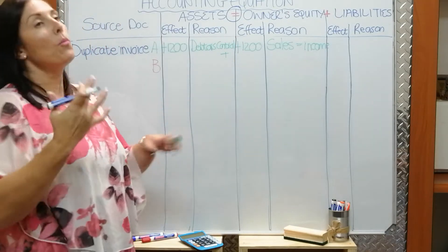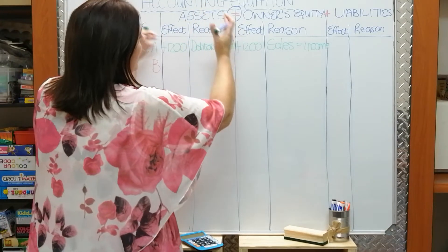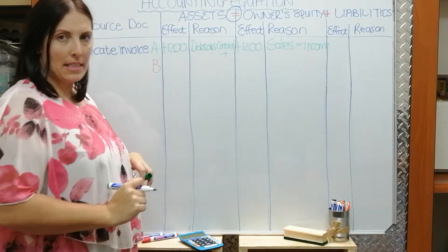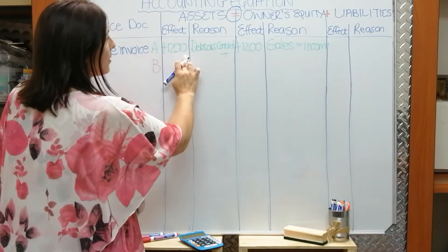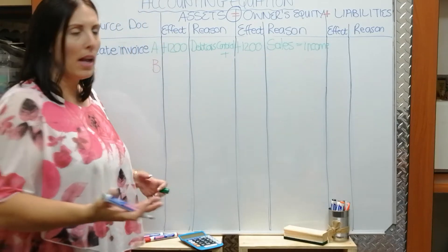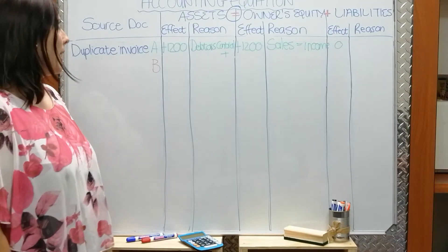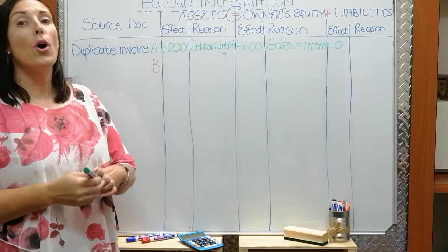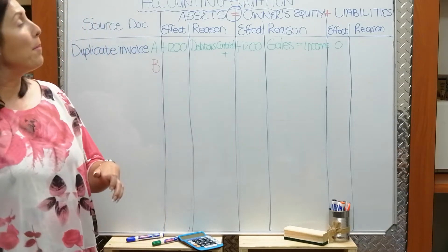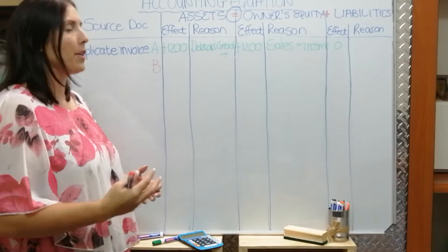We're not done with this transaction yet, but you can already see that my assets — the left part of the equation — is equal to my owner's equity plus liabilities: plus 1,200 equals plus 1,200. Did anything happen to liabilities? No. You can leave it open or write a zero. Now we move on to the B part — the not so nice part, where we work with the smaller amount, the cost price amount, the cost of sales amount.